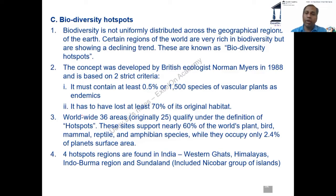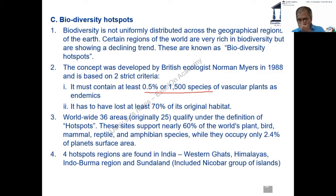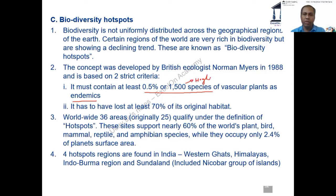For a region to be called a biodiversity hotspot, the first criteria is that it must contain at least 0.5 percent or 1500 species of vascular plants as endemic — whichever is higher.